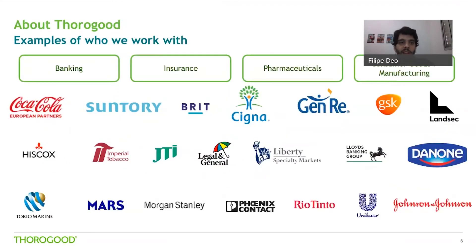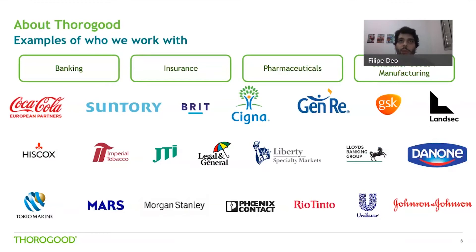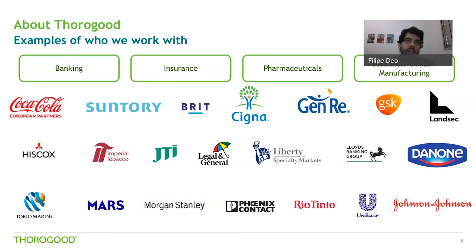Here we have some of our main clients. We work mainly with four industries: banking, insurance, pharma and CPG, but we also work with customers in many other industries. The companies we work with are usually large blue chip companies, and we value building long-lasting relationships with our clients so we can build solutions and deliver value as much as possible.